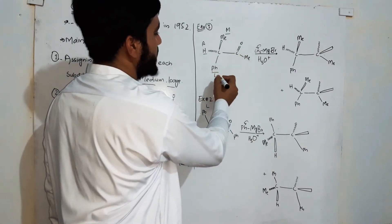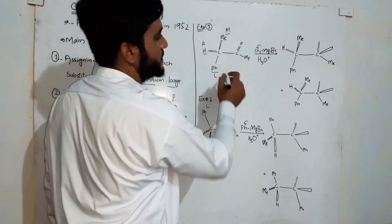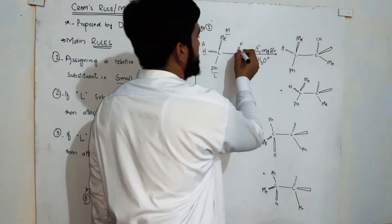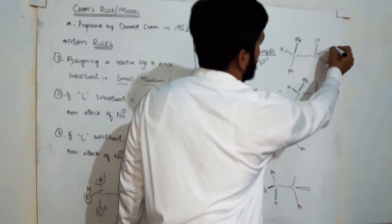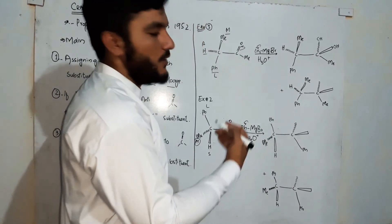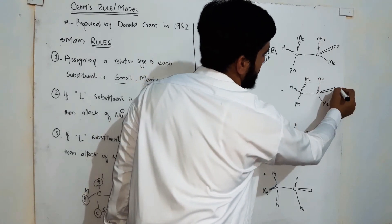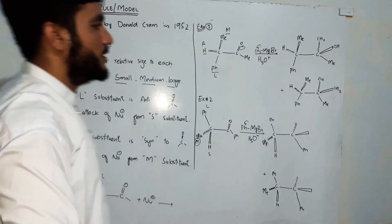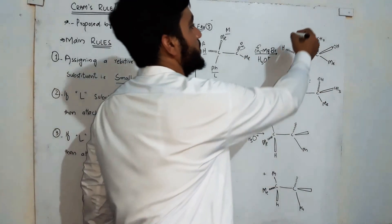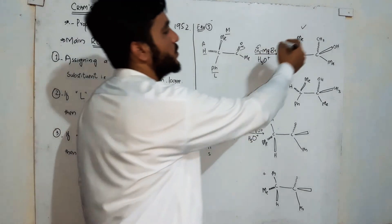In example one, the larger substituent is anti to the carbonyl group, so addition of the nucleophile occurs according to the smaller substituent, which is hydrogen, and it is below the plane. Therefore, addition of CH3 occurs below the plane. The oxygen gets a partial negative charge and gains hydrogen from the medium, converting to a hydroxyl group above the plane. This product is the major product following Cram's rules and is called the Cram product.